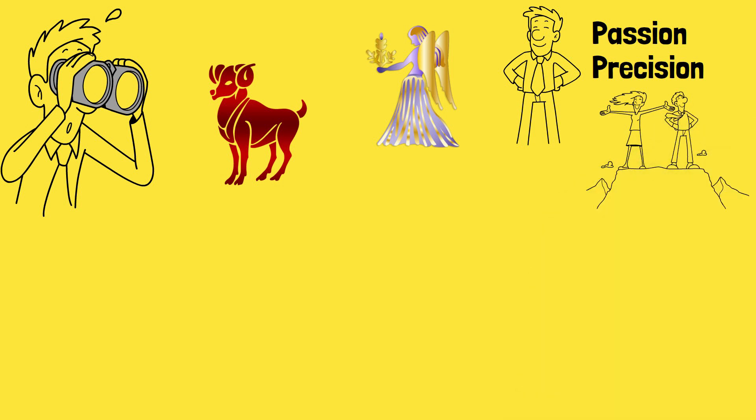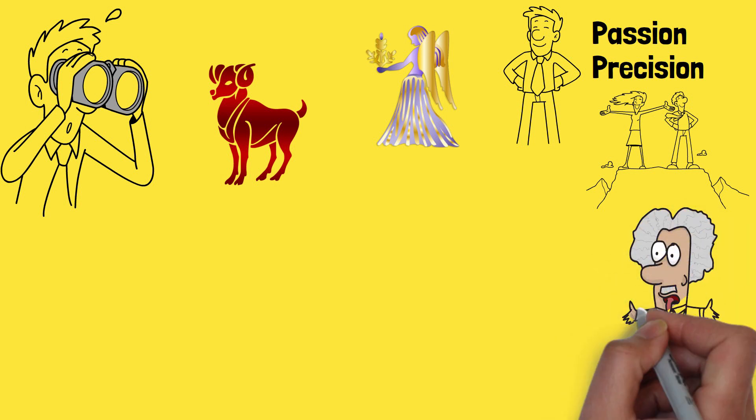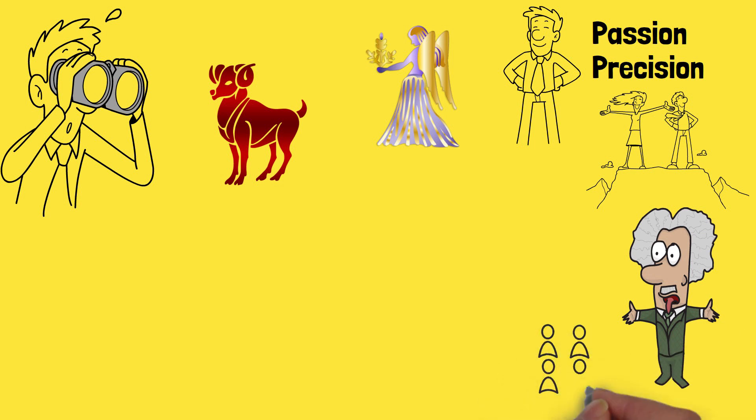Aries brings the excitement, and Virgo ensures that every twist and turn is perfectly calculated. Talk about a thrilling partnership, with a safety manual included.